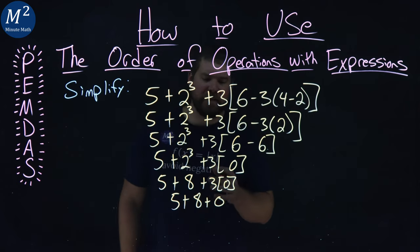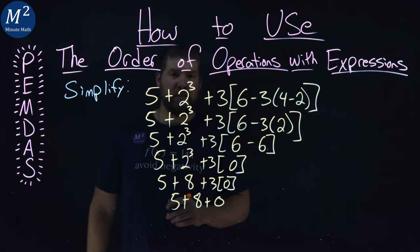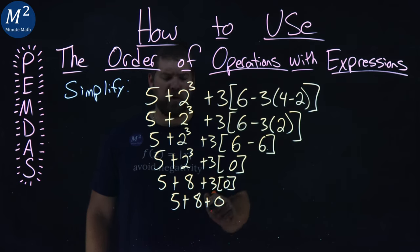Now, this last step here, we probably can jump ahead. It's all just addition. 5 plus 8 is 13, plus 0 is still 13.